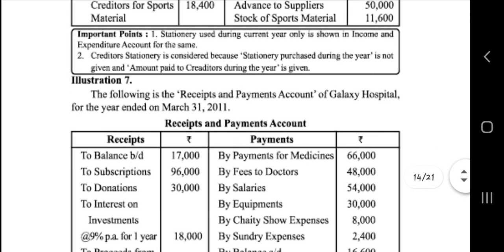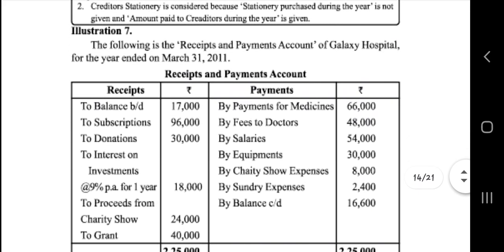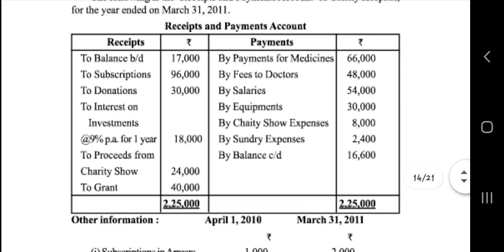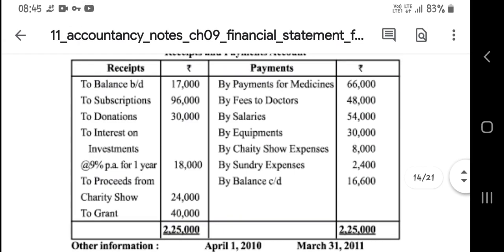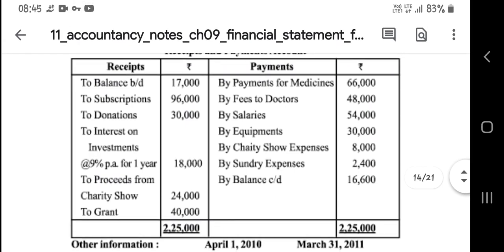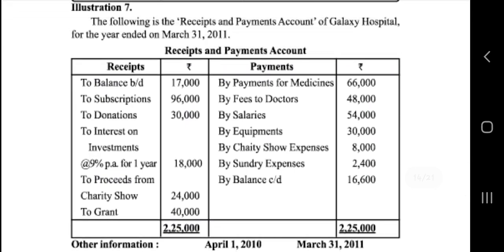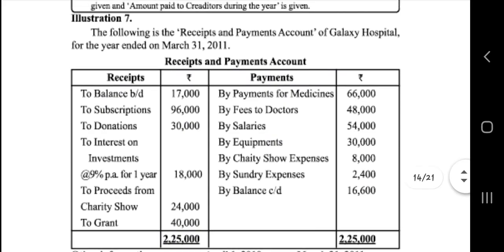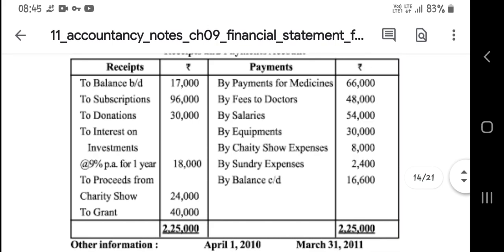Next is the balance sheet — receipts and payments amount. The balance is 17,363. You have given: subscription is 5,96,000, donation is 30,000, investment is 18,000, and visits for charity shown is 4,000, that is 30,000.